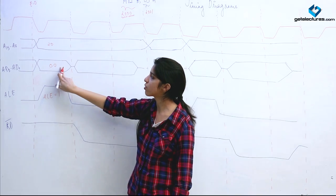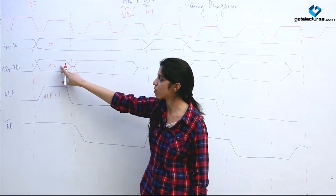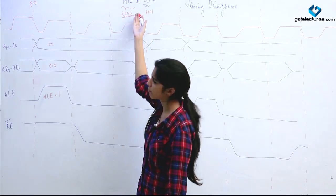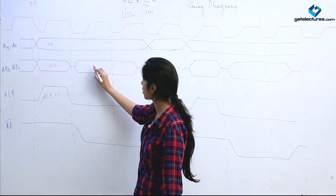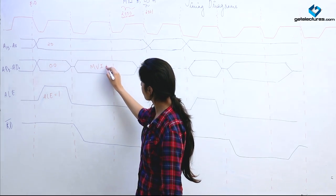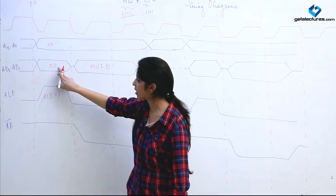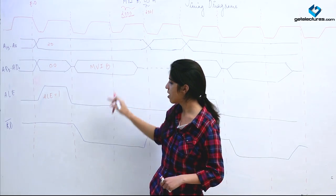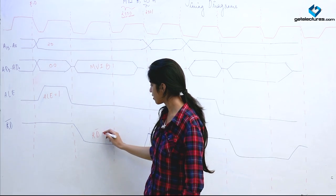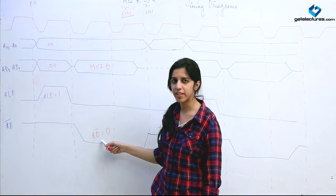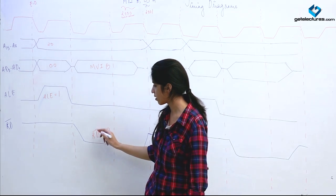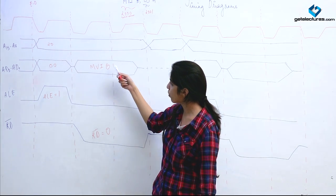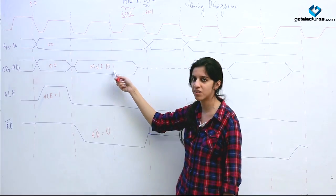The processor goes to memory location 2000H and fetches the opcode — suppose the opcode for MVI B is EFH. MVI B gets loaded onto the data bus. Now since ALE is 0, this bus behaves as the data bus. We then make read bar 0, which means we are going to read this instruction — the processor has fetched this opcode.